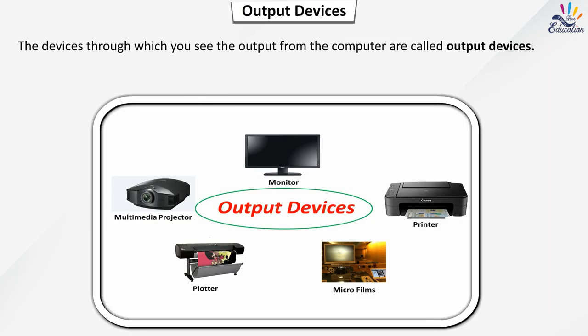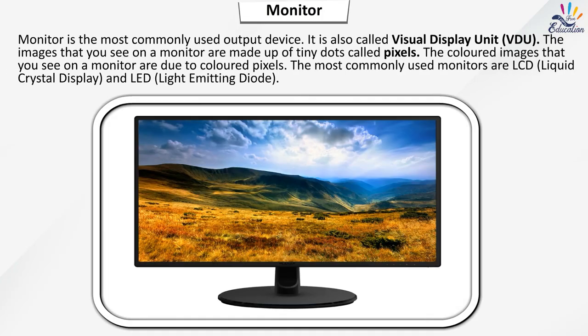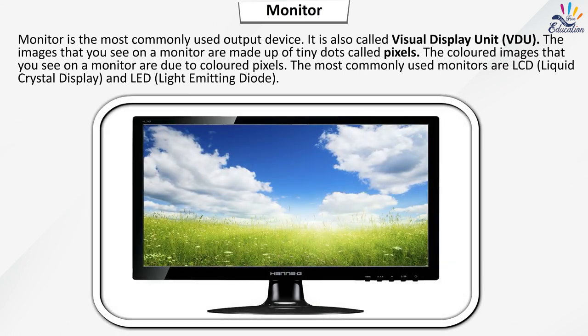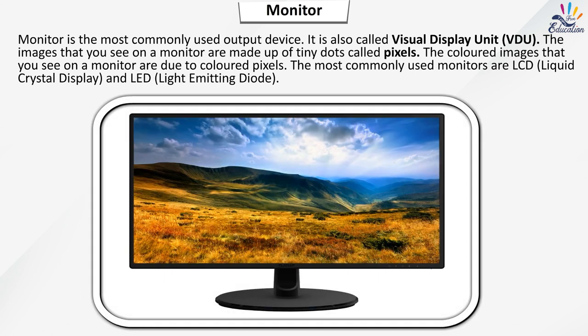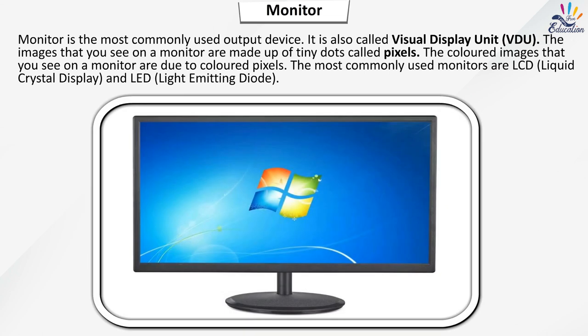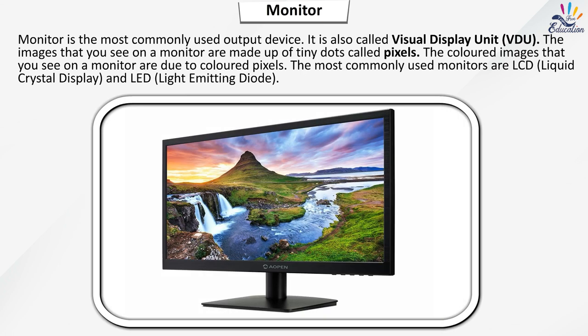The devices through which you see the output from the computer are called output devices. Monitor is the most commonly used output device. It is also called Visual Display Unit. The images you see on a monitor are made up of tiny dots called pixels. The most commonly used monitors are LCD (liquid crystal display) and LED (light emitting diode).